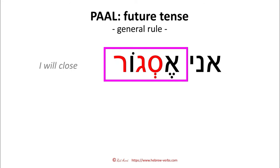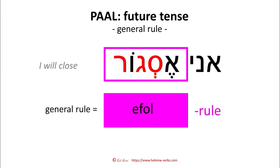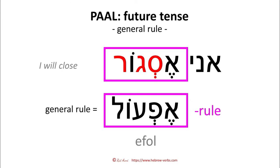ANI ESGOR — I will close — as an example for all regular Paal verbs. That is the reason why the future tense general rule is also called the EFOL rule: E and O are the vowels — ESGOR, EFOL. That comes from the Hebrew word EFOL. Here you see Pei, Ayin, Lamed — representing a root — with Alef in front and a vav between the second and third letter, giving us the first person in the future tense. This is the EFOL rule. Now, if we take another Paal verb that until now looked very regular — LILMOD, to learn — and I want to say he will learn, it's not HU YILMOD, it's HU YILMAD, and it is ANI ELMAD. That is very different from what I just taught you — this is definitely not the general rule and not EFOL.